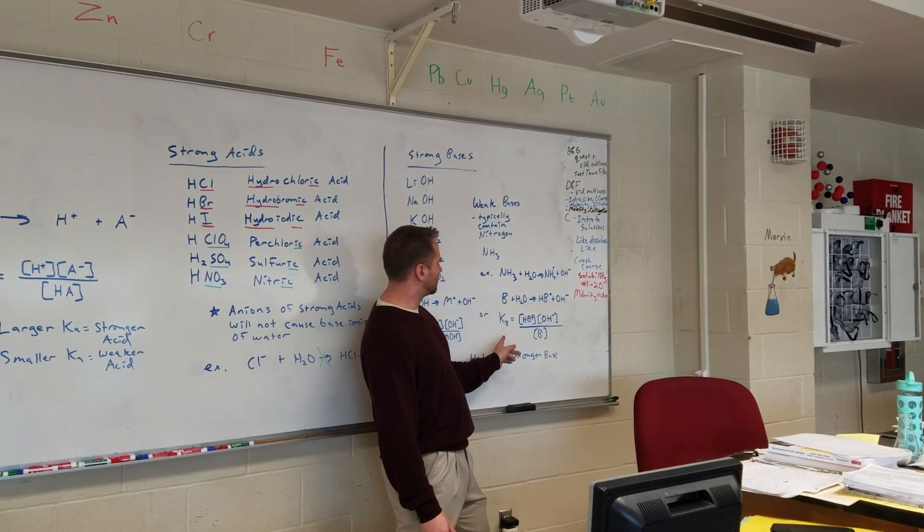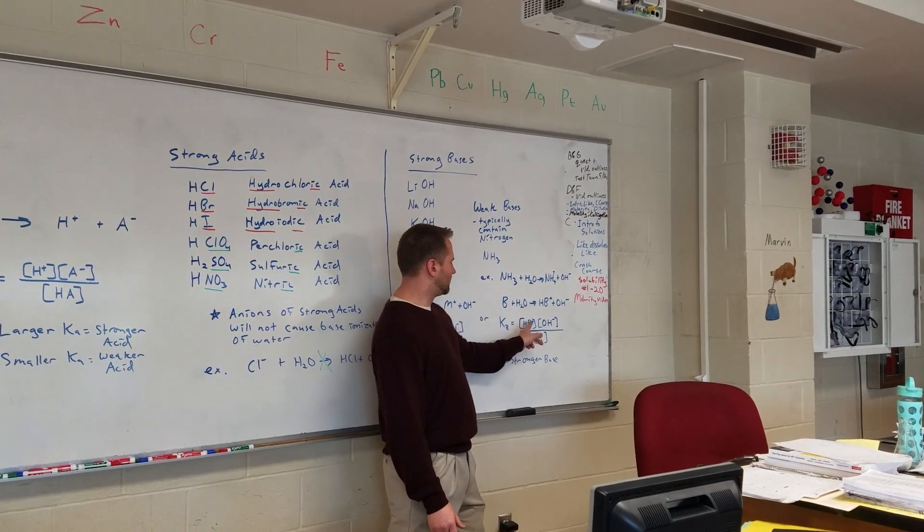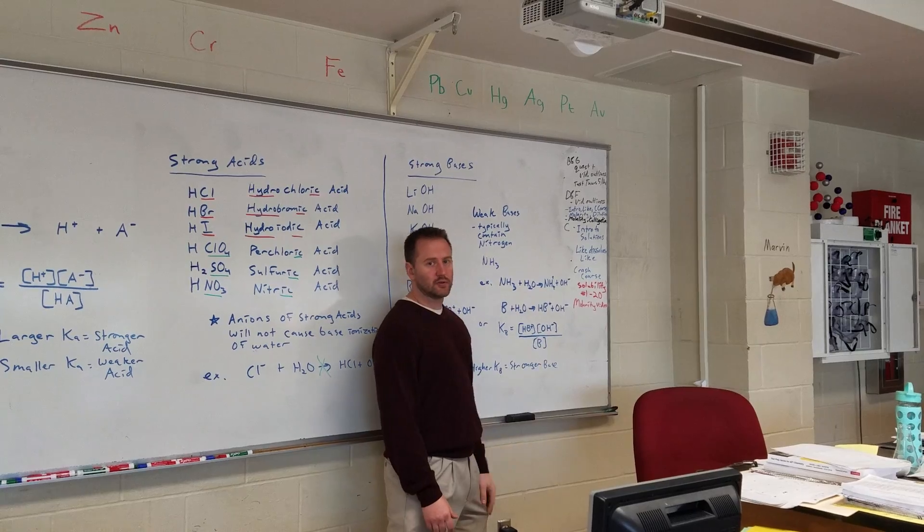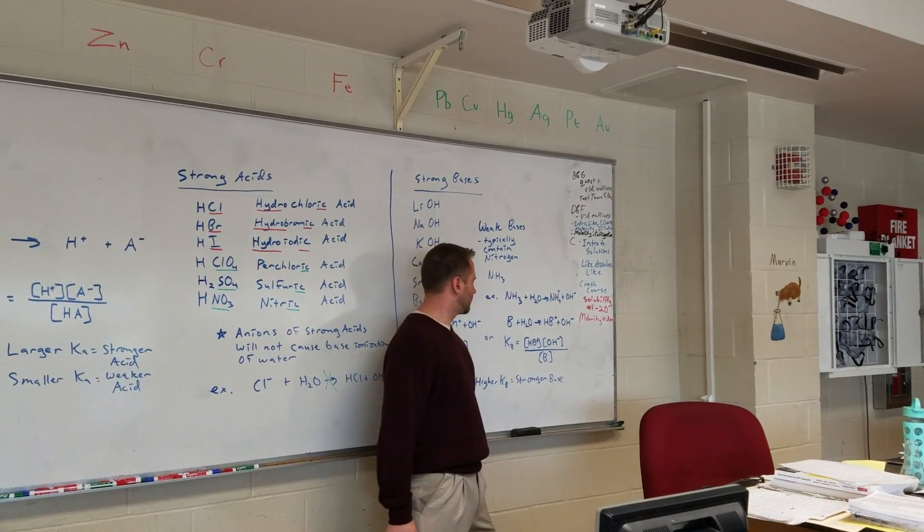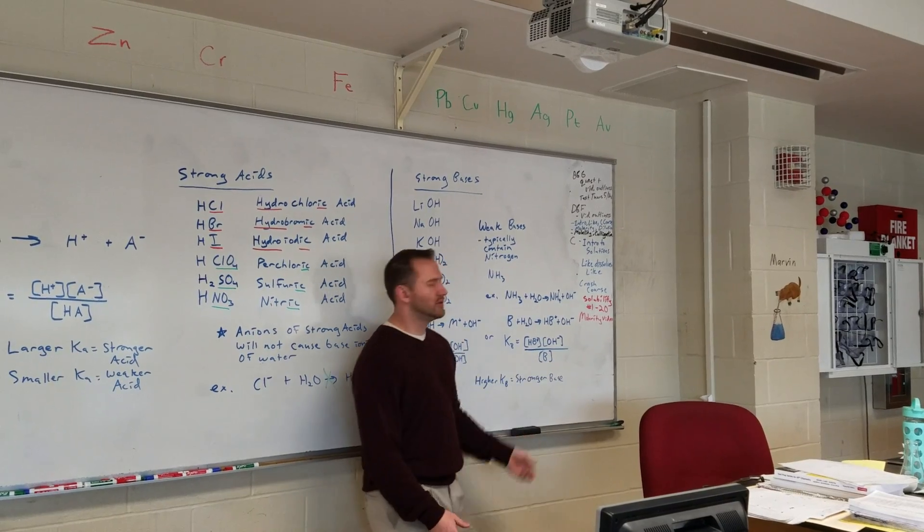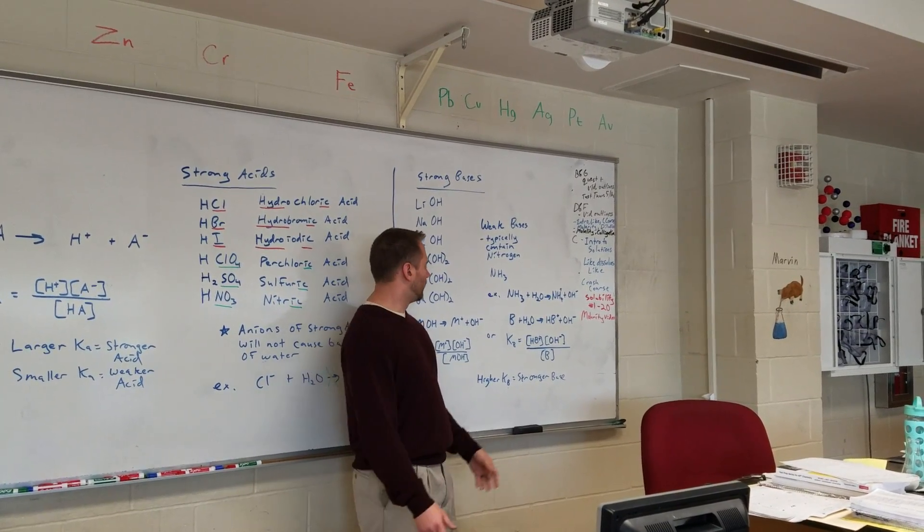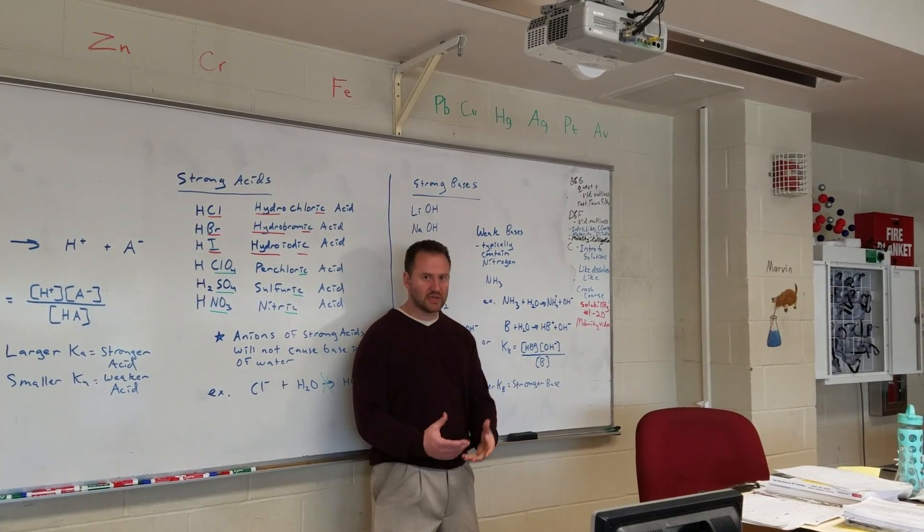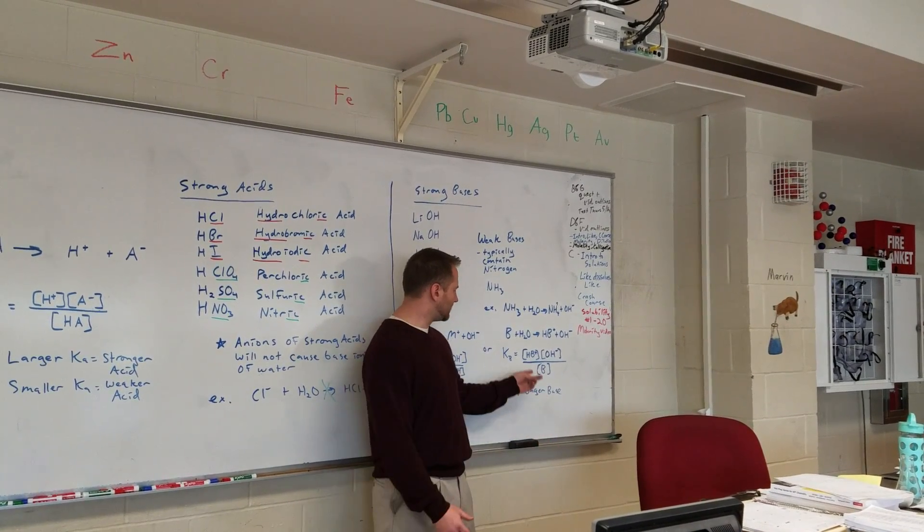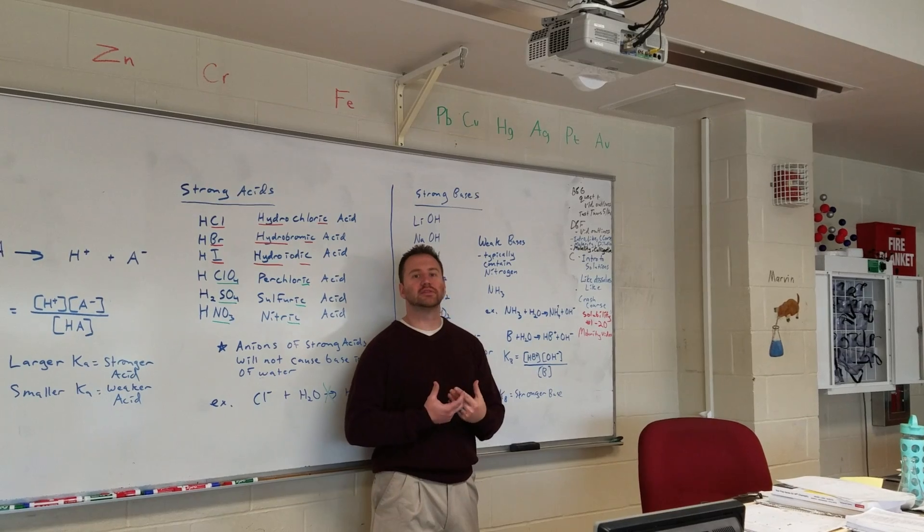So you could represent this as the Kb is the dissociated components that you would have, the hydroxide ion and the base with its newly absorbed proton, compared to the amount of base you have. So a weak base, most of the time, is going to be just a base. However, some of the time, it's going to have taken water and split it apart.